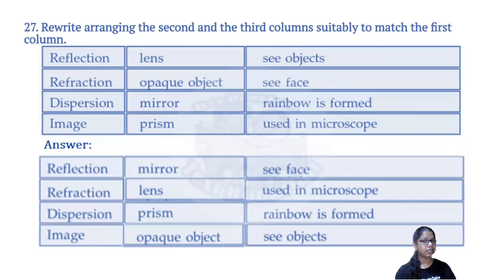Match the third column suitably to the first column. First column: reflection, refraction, dispersion, image. The matches are: reflection — mirror; refraction — lens; dispersion — rainbow formation; image — opaque objects. So reflection uses a mirror, refraction uses a lens, dispersion produces a rainbow, and images are formed from opaque objects.